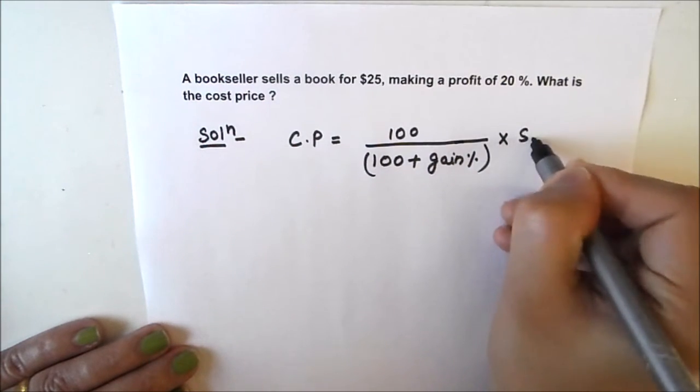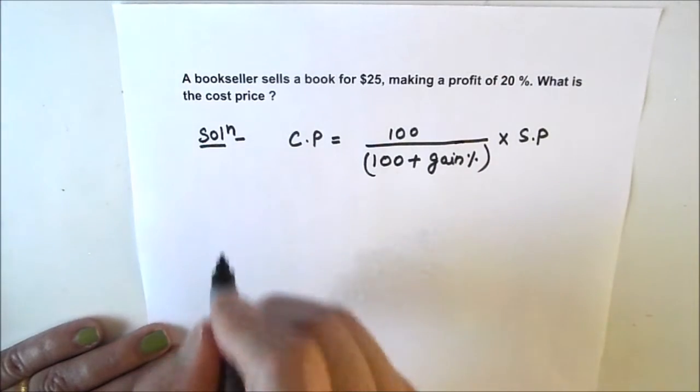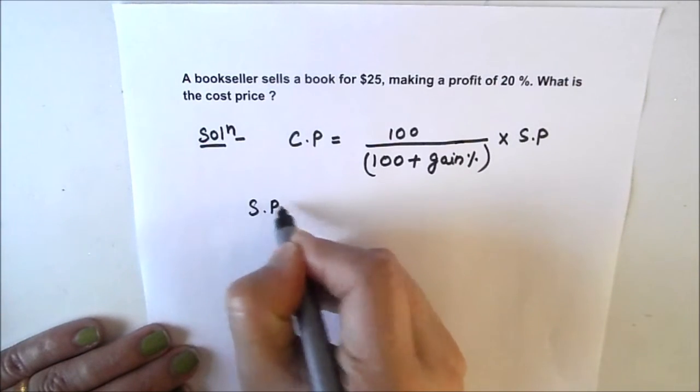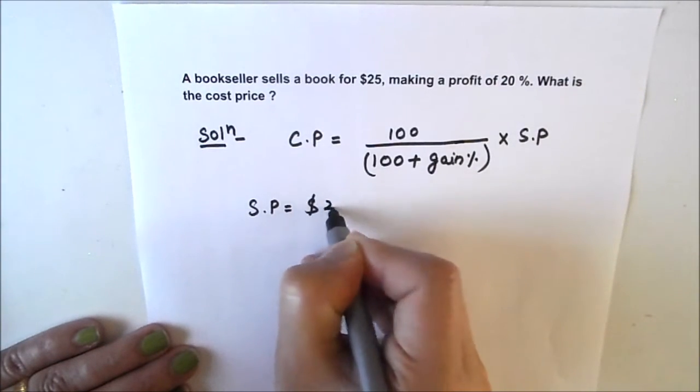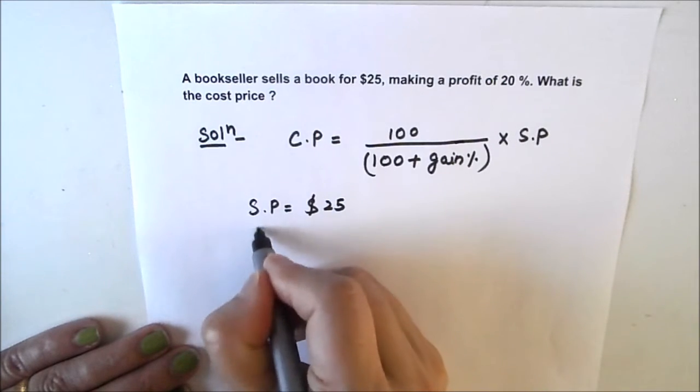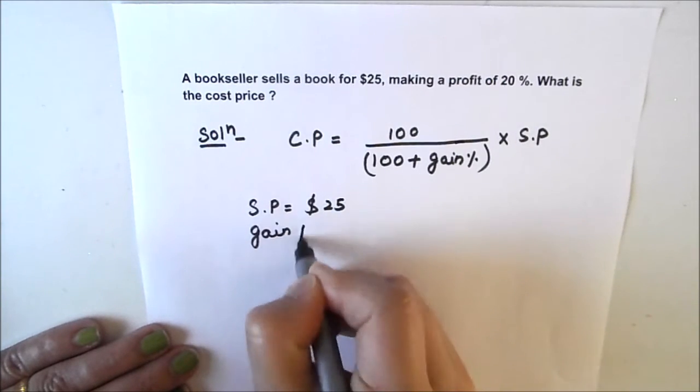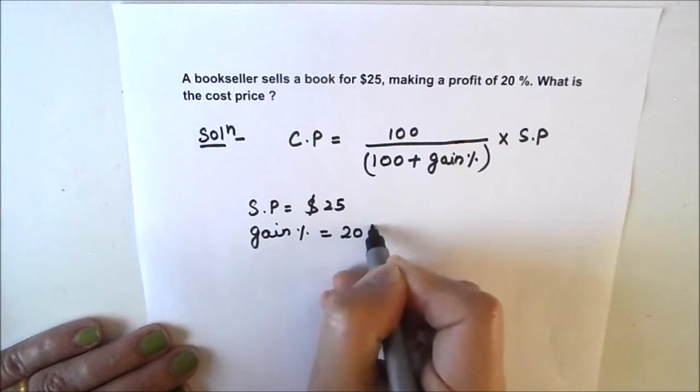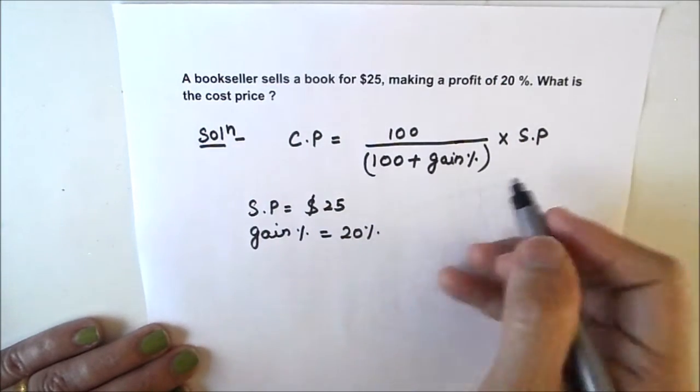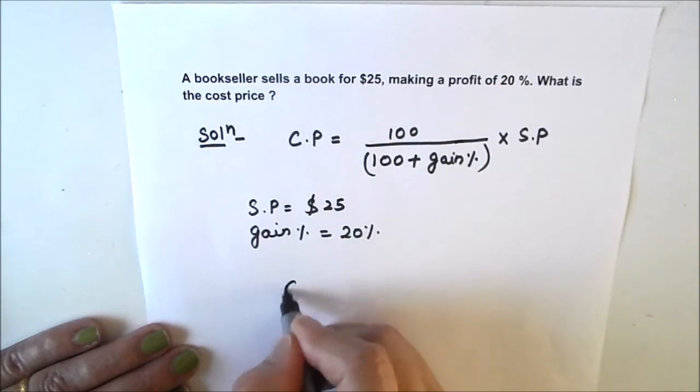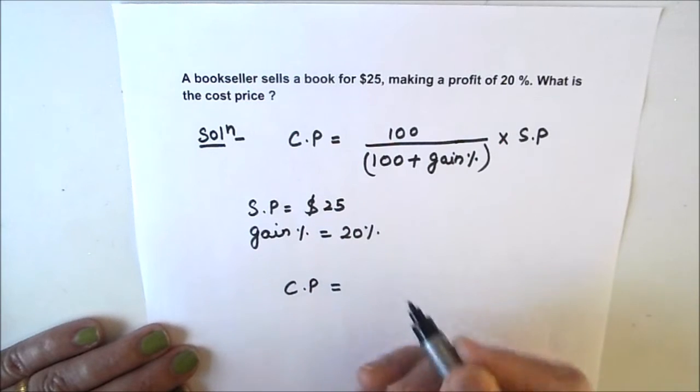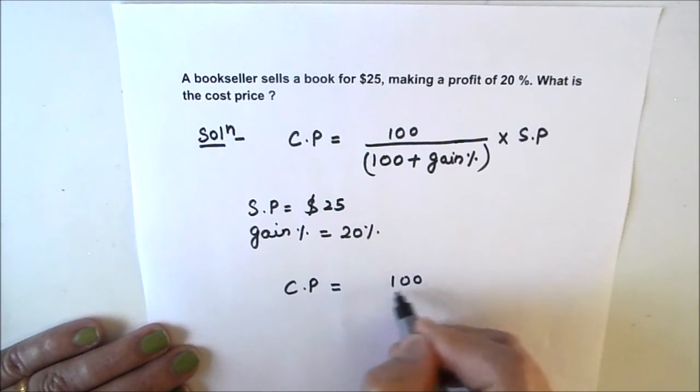The selling price is given as $25, and the gain percent or profit percentage is given as 20%. We can substitute these values into the formula and find the cost price directly, which is 100 upon (100 plus 20) times 25.